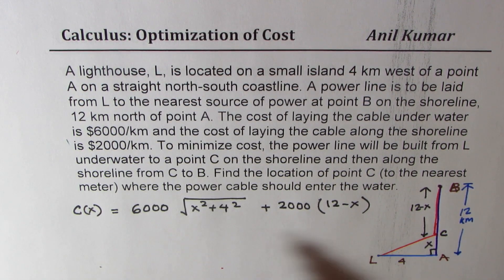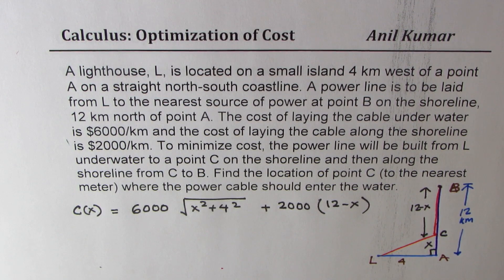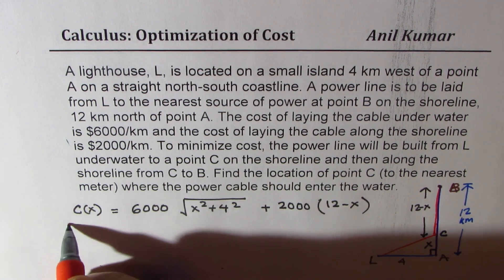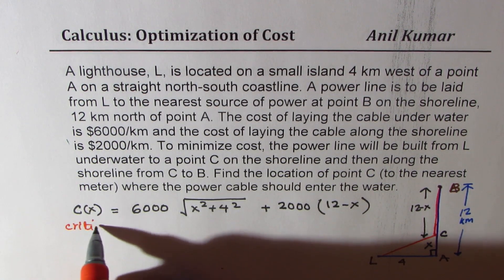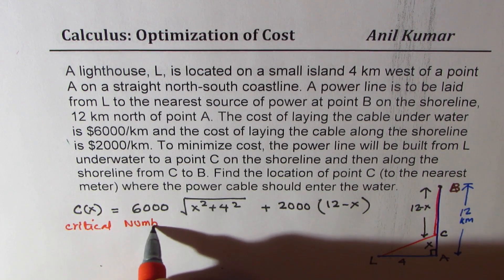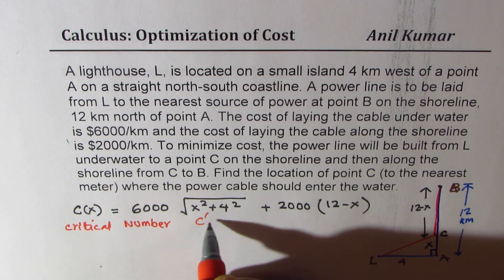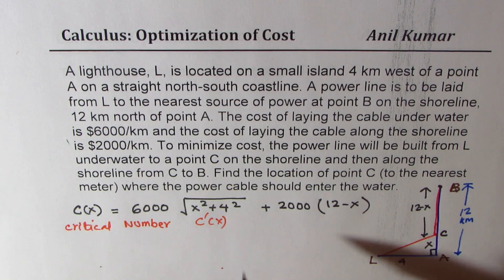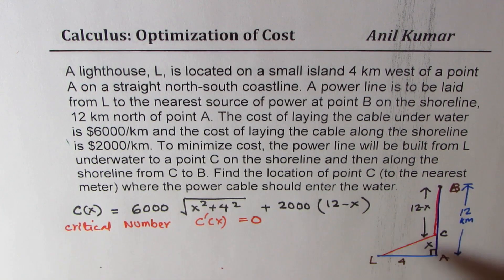Now, to minimize the cost, let's find the critical number. That is C'(x) and we will later equate it to 0 to find the minimum cost.